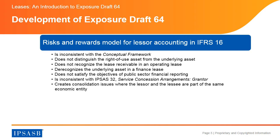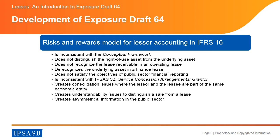If the lessor classifies the lease as a finance lease, the underlying asset is not recognized by either party and separate records will need to be maintained to report the underlying asset in the consolidated financial statements. On the other hand, if the lessor classifies the lease as an operating lease, the lessor will not recognize the lease receivable, even though the lessee will recognize the lease liability. Additional records will be required. The use of different accounting models may make leasing transactions less understandable to some users of financial statements. It may also be difficult for users to distinguish between a lease and the sale of an asset in a lessor's financial statements. Different recognition criteria for the same transaction distort the analysis of the financial position of public sector entities, creating asymmetrical information in the public sector.